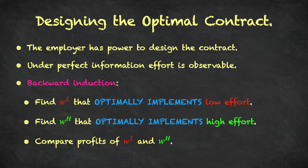What technique do we use to solve this problem? We're going to look for a sub-game perfect equilibrium, using backward induction. The employer considers following a low effort approach and finds the best way of doing that, then looks at a high effort approach. The game-theoretic or mechanism design terminology for this is called implementation. We're looking for a contract WL that optimally implements low effort — it is the profit-maximizing contract among all low-effort contracts.